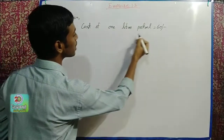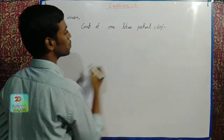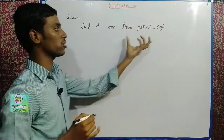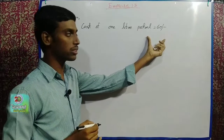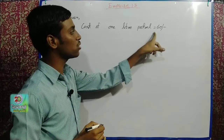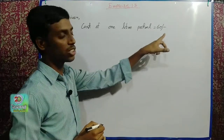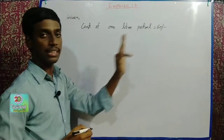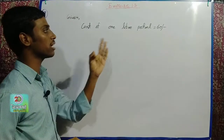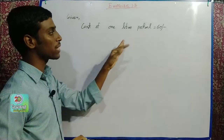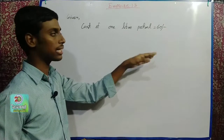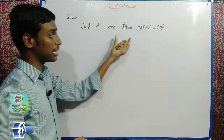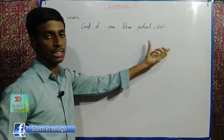Let's start. One liter of petrol costs 60 rupees. Two liters cost 120 rupees, so if you multiply: 2 into 60 is 120. Three liters of petrol: 3 into 60 is 180. That's why 750 liter petrol cost we need to calculate.